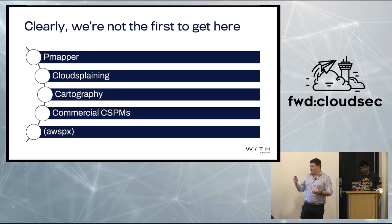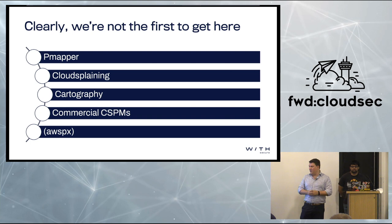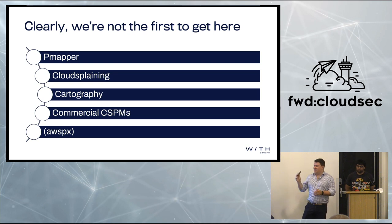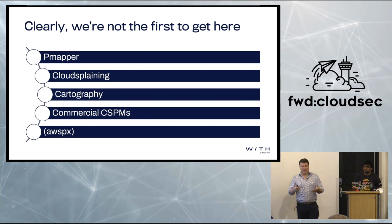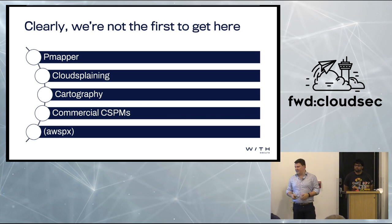Clearly we're not the first people to have thought this is a problem — quite a few smart people have been working on this already. I know Eric was here last year presenting PMapper, which has been really useful for us. Cloudsplaining is also great for digging into which policies and roles are going to be most dangerous in a way that you can give to a dev team and actually have them do something with it. Cartography's not really security or IAM specific, but it's a good way of mapping relationships between things in a cloud provider. A lot of the CSPMs are starting to do really interesting things in this space — moving to mapping out relationships between vulnerabilities and the permissions that different entities have.